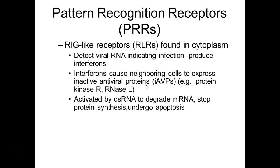Remember apoptosis — programmed cell death. Do we get inflammation with apoptosis? No. This is when our cells die in a controlled way that doesn't elicit a large inflammatory response. Phagocytic cells — resident macrophages — will come and clean up the debris from these dying cells.